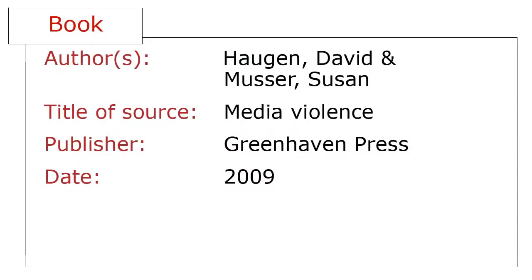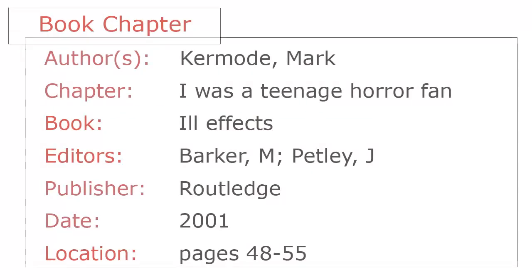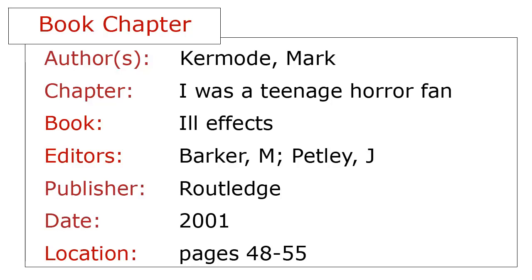For a book, you'll need the authors, the book title, the publisher, and the publication year. Some books have chapters written by different people. If that's the case, you'll need to cite the individual chapter rather than the book. You'll need information on the chapter's author and title, the title of the book that the chapter is published in, the editors of the book, the publisher, year, and the chapter pages.